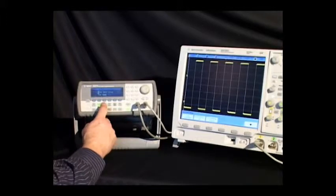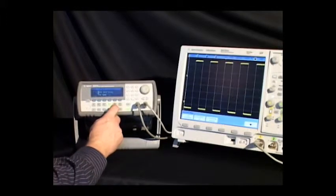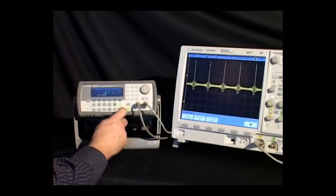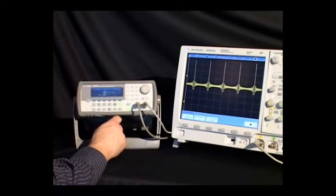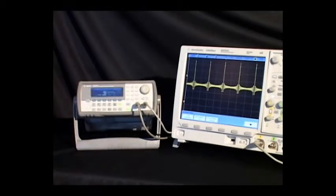The 33220A is armed with a full arsenal of built-in signals, including pulse and arbitrary waveforms, using a 14-bit, 50 mega-sample per second, 64K point ARB generator.